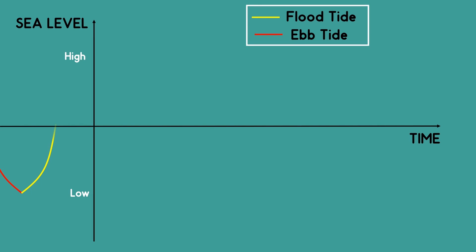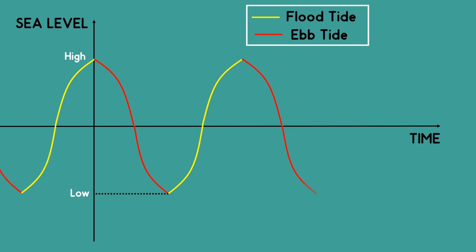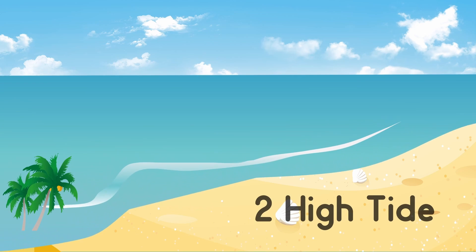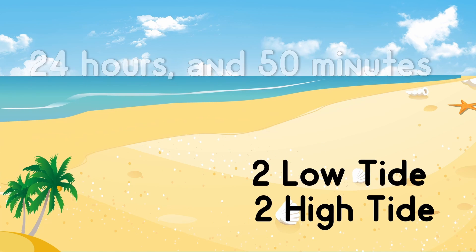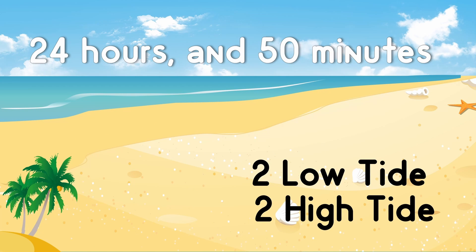In this tidal cycle, we get a high tide followed by the low tide, which is followed by the high tide and again a low tide. This cycle repeats continuously. We get two high tides and two low tides in 24 hours and 50 minutes. Most shorelines experience this cycle. However, some areas have just one of each.